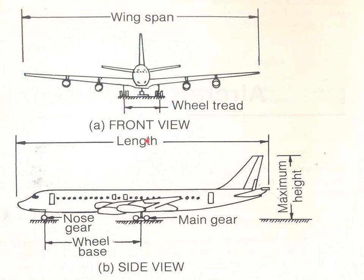Key aircraft dimensions: wingspan is the tip-to-tip dimension of the wings. Wheel tread is the distance between the main gears on either side. Wheelbase is the distance from the nose gear to the main gear. Maximum height is measured from the surface to the highest point of the aeroplane when parked. The front view shows wingspan and wheel tread; the side view shows overall length, nose gear, main gear, and wheelbase.